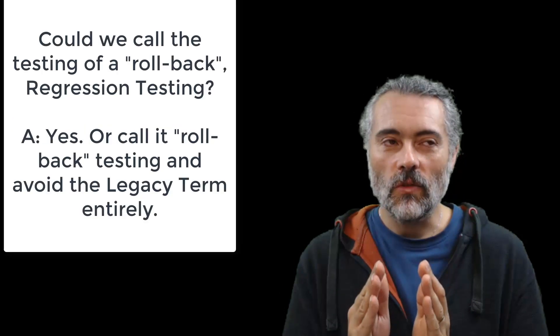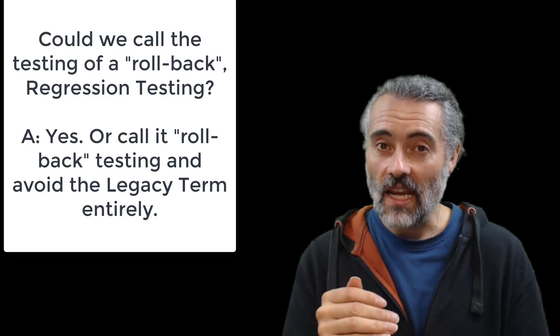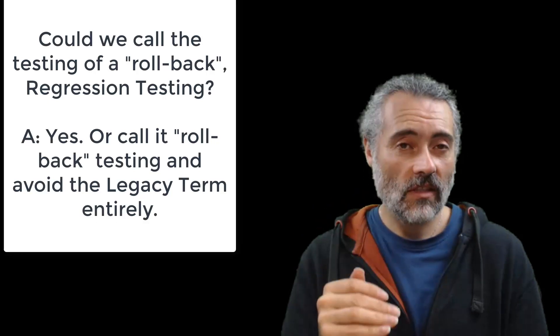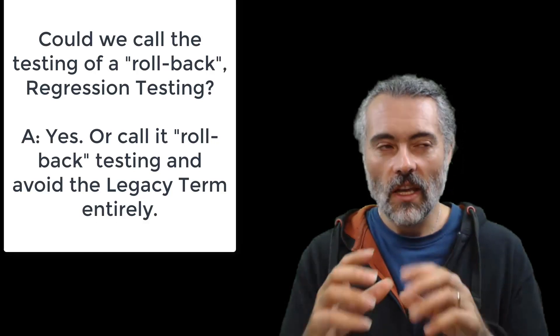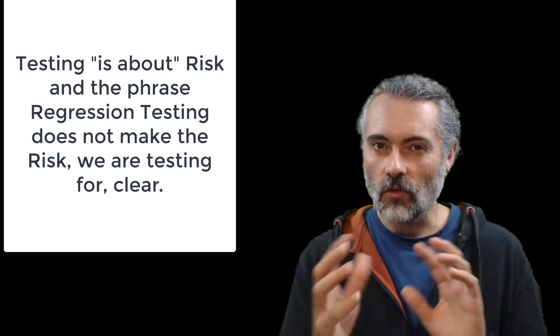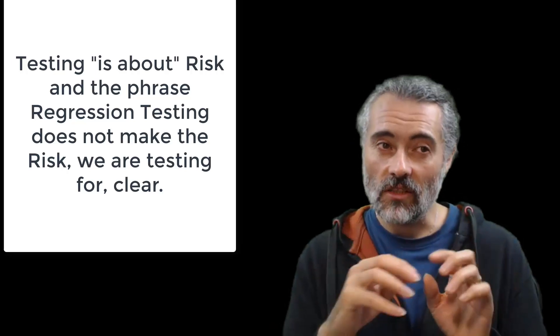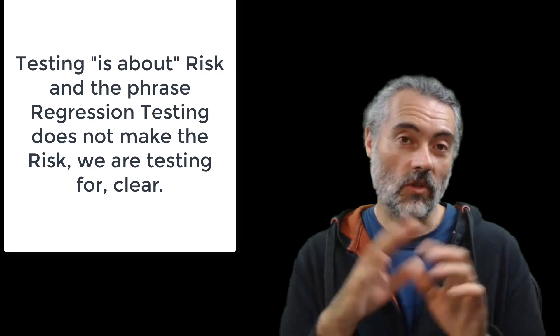What I would suggest you do is that you call it migration or rollback to an earlier version testing and then see what risks there are in that process and then target the risks. Because testing is really about risk. When we use the term regression testing, we're kind of obscuring the risk. We're just saying something might have changed. Therefore, we'll run some stuff in some other areas. If it's automated, we'll just run everything again.